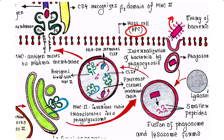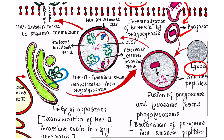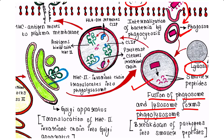That vesicle is called a phagosome. So the bacteria is internalized by phagocytosis and the phagosome is formed around this bacteria. This phagosome fuses with the lysosome, forming a phagolysosome. The lysosome has an acidic environment and it also contains hydrolytic enzymes as well as reactive oxygen species, those are ROS.